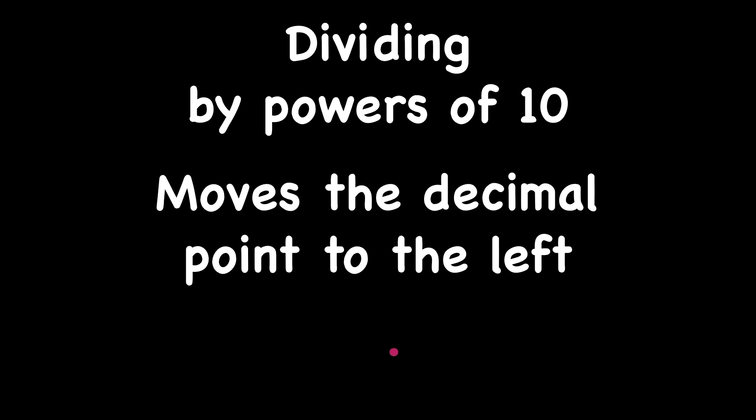Now let's try some dividing. Dividing by powers of ten means the decimal point is going to move to the left. If we're dividing by ten, we'll move our decimal point one place to the left. If we're dividing by one hundred, we'll move it two places to the left. If we're dividing by one thousand, we'll move it three places to the left.